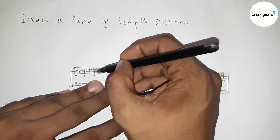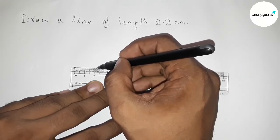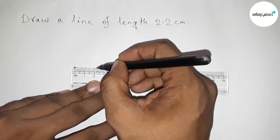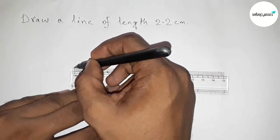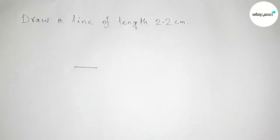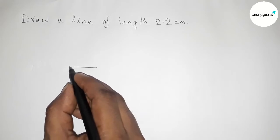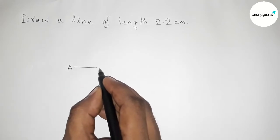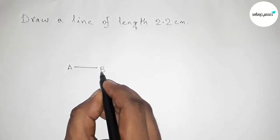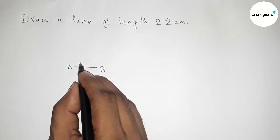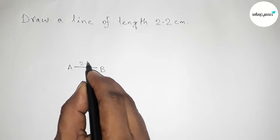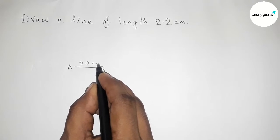So this is 2.2 centimeters. This is 2.2 centimeter length. Joining this and taking here a point, here A and this side B. So the line AB is a line of length 2.2 centimeters.